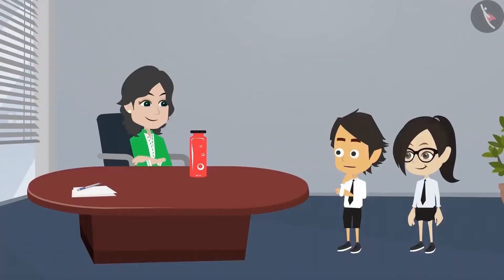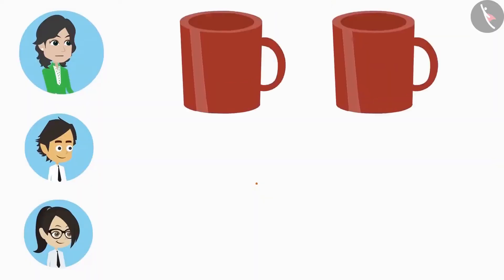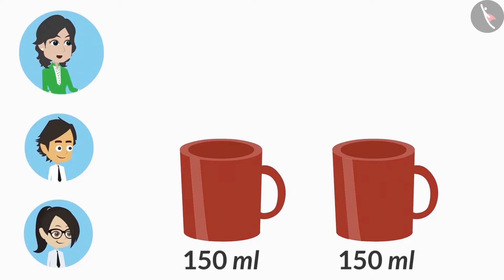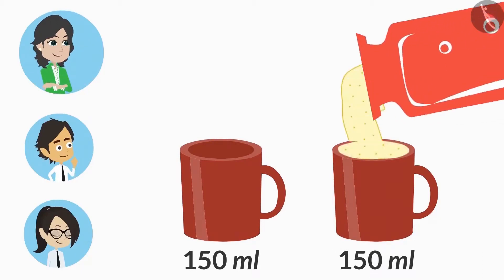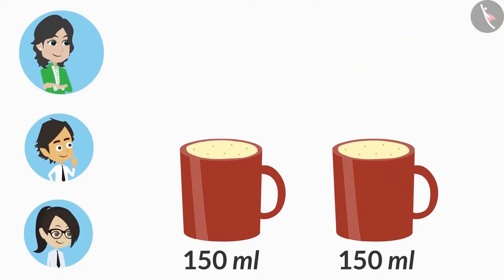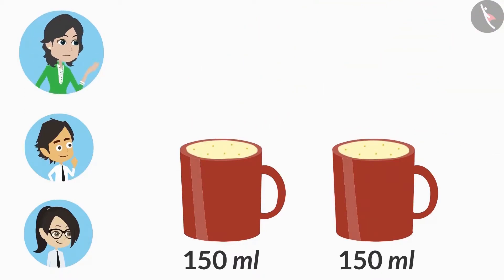Then how will we measure the buttermilk? Look, I have two cups here. A normal size cup is approximately 150 ml. You can pour the buttermilk in both these cups. Both the cups are completely filled. This means that the buttermilk has been divided into two equal parts.